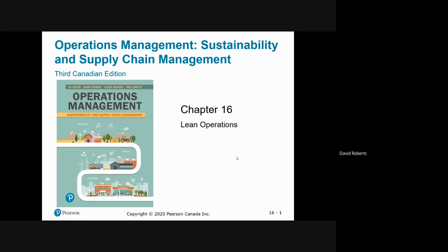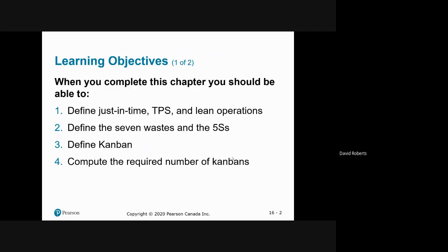Chapter 16 covers lean operations. We're going to focus on just-in-time, total production scheduling, and lean operations. We'll also talk about the seven wastes of lean — how we identify wastes so we can reduce or eliminate them — the five S's, and we'll calculate Kanban size and explain what a Kanban is.